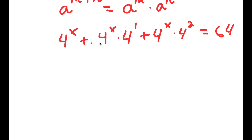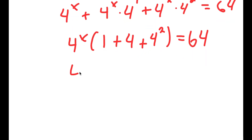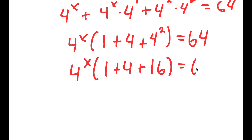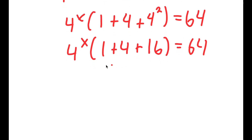From here, I'm going to factor out 4 to the power of x, so I get 4 to the power of x times 1 plus 4 plus 4 squared. And 4 squared is 16, so I get 4 to the power of x times 1 plus 4 plus 16.